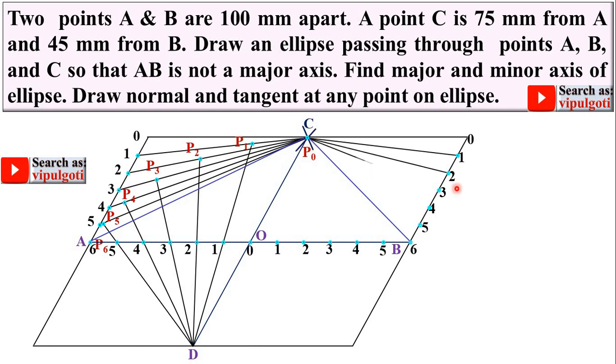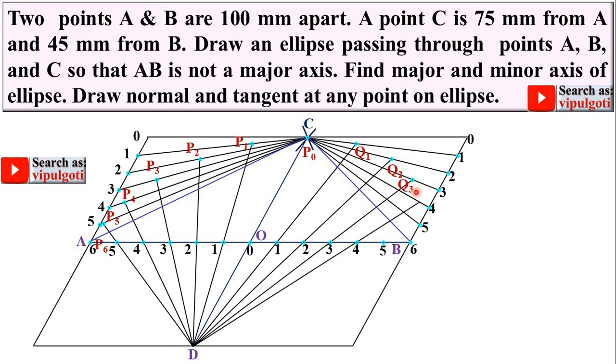Similarly you can repeat the steps on the right side of CD. So you will get Q1, Q2, Q3, Q4, Q5 and at last Q6.